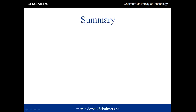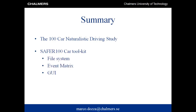Before concluding, let me remind you what we have gone through. First, I introduced the 100 Car Naturalistic Study performed by Virginia Tech. Then I presented the software called Safer 100 Car to analyze the data from this study. This software is made of three components: a file system, an event matrix, and a graphical user interface. I also briefly explained how you can use each component for your analysis.